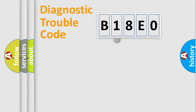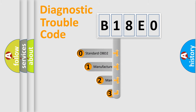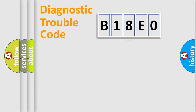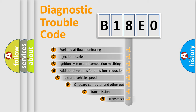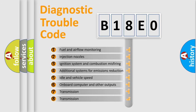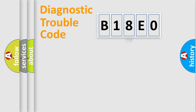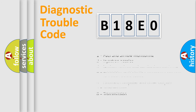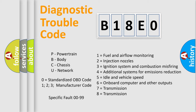This distribution is defined in the first character of the code. If the second character is expressed as zero, it is a standardized error. In the case of numbers 1, 2, or 3, it is a manufacturer-specific error. The third character specifies a subset of errors. This distribution is valid only for the standardized DTC code, and only the last two characters define the specific fault of the group. Such a division is valid only if the second character code is expressed by the number zero.